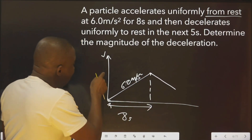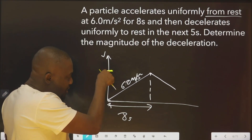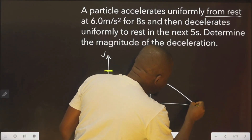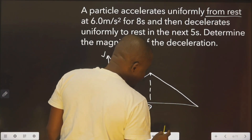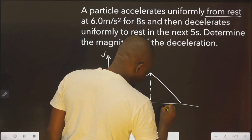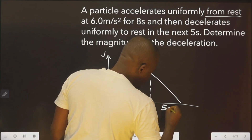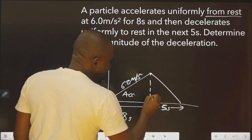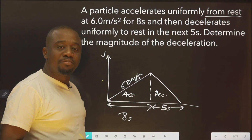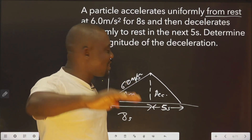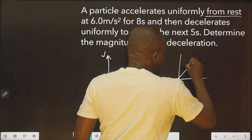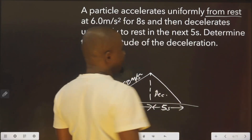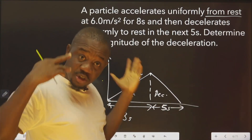Decelerate means it's slowing down. The velocity that was high is now reducing. As it's reducing, time is still moving. So we plot the graph — we have something like this. Here: 5 seconds. This is the acceleration side, and this is the deceleration side, because there was no constant velocity. So we can't have a flat section — nothing was constant; it went up then down.